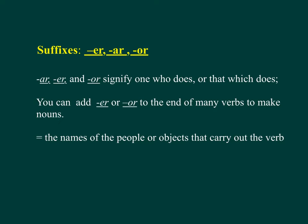AR, ER, and OR signify 'one who does' or 'that which does.' You can add ER or OR to the end of many verbs to make nouns, equal to the names of the people or objects that carry out the verb.